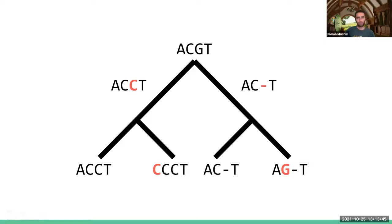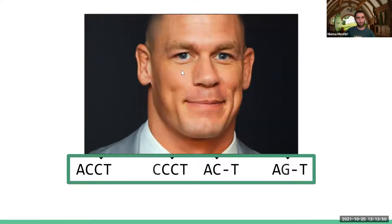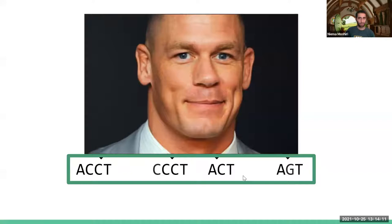The fundamental problem is that all of this evolutionary history is hidden from us — we can't see any of it. All we can observe are the modern-day sequences. And even worse, those gaps I'm drawing don't actually exist in reality. All I see are the sequences without the gaps. So all I see are these four sequences, and my problem is figuring out the evolutionary history from just those sequences.